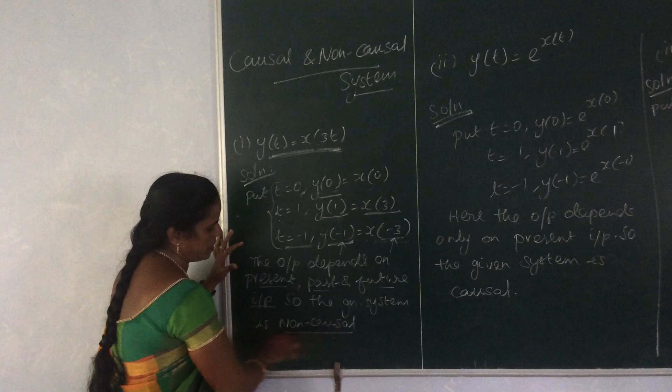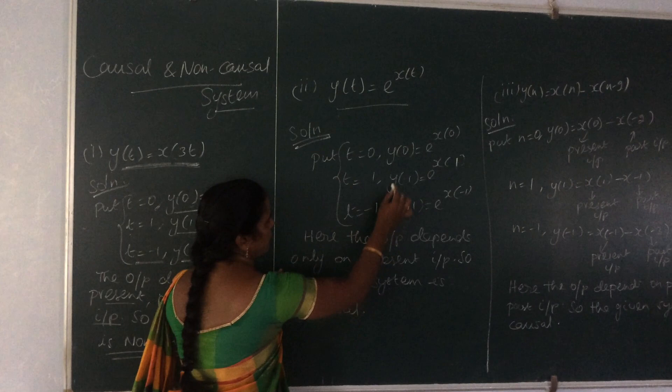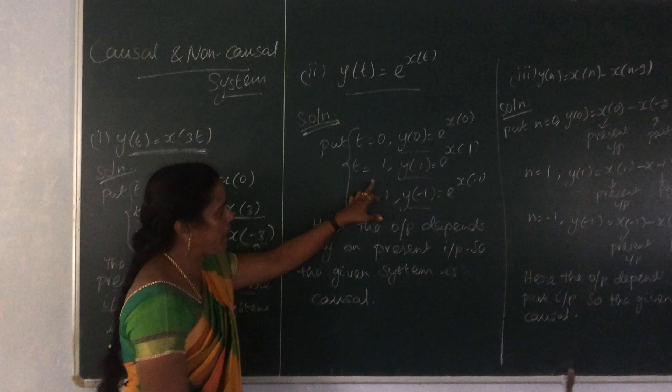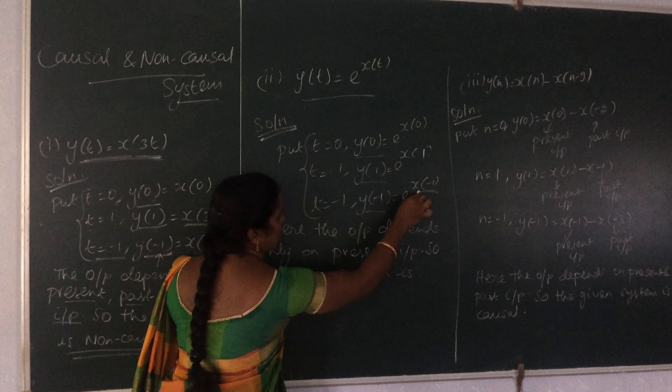The second problem: y(t) = e^x(t). Again we substitute 3 time instances. When t = 0, y(0) = e^x(0). When t = 1, y(1) = e^x(1). When t = -1, y(-1) = e^x(-1). Each instance of the output depends upon that same particular present input. So the given system is a causal system.